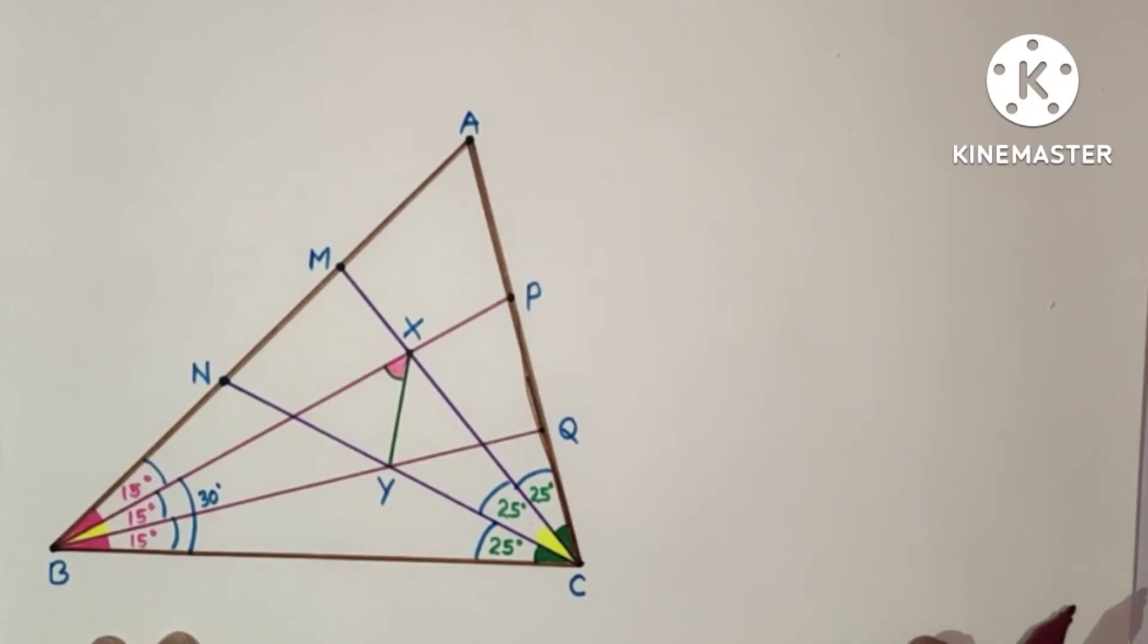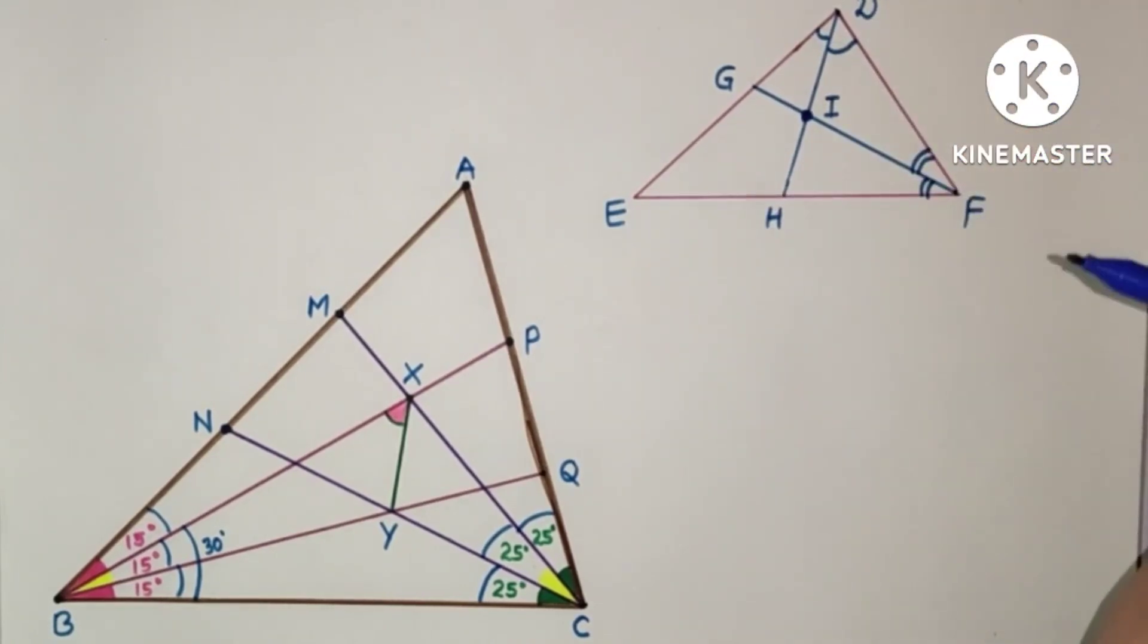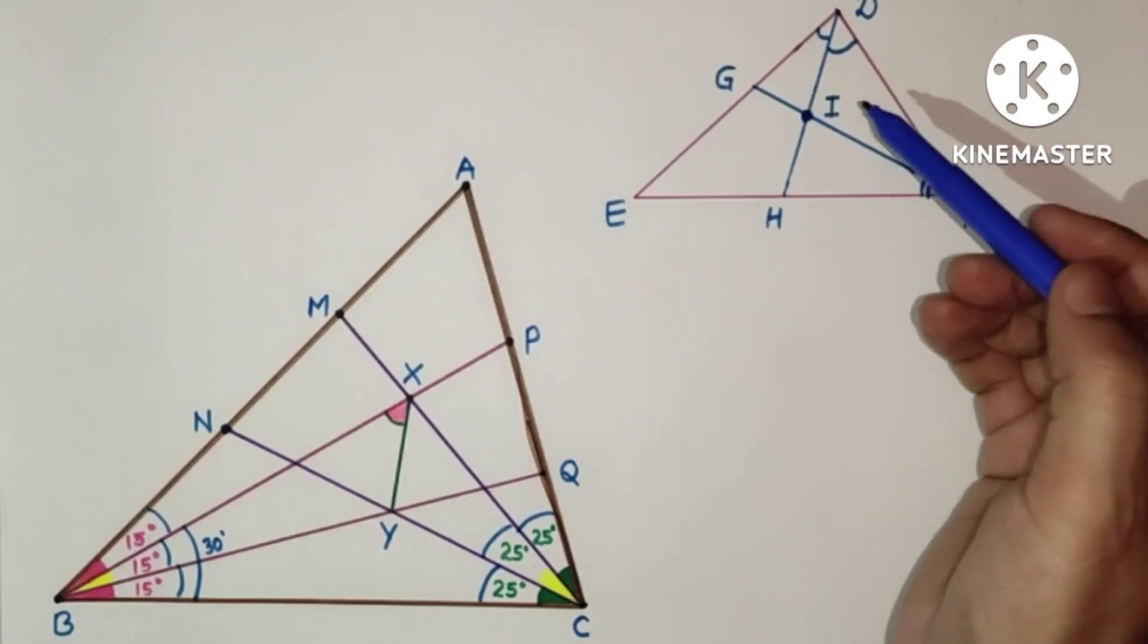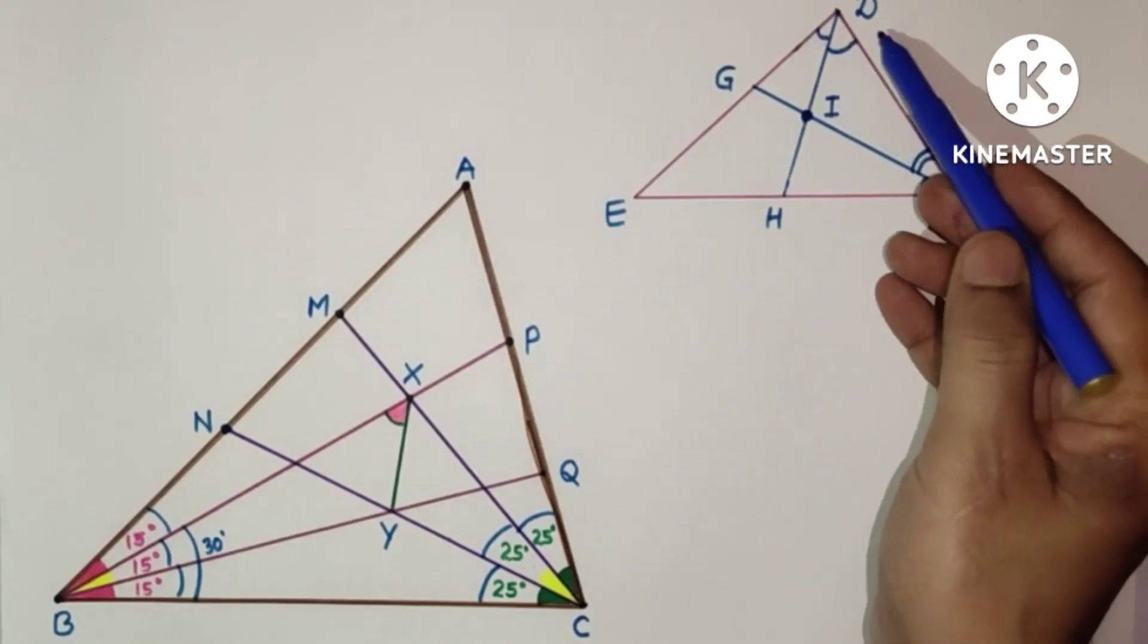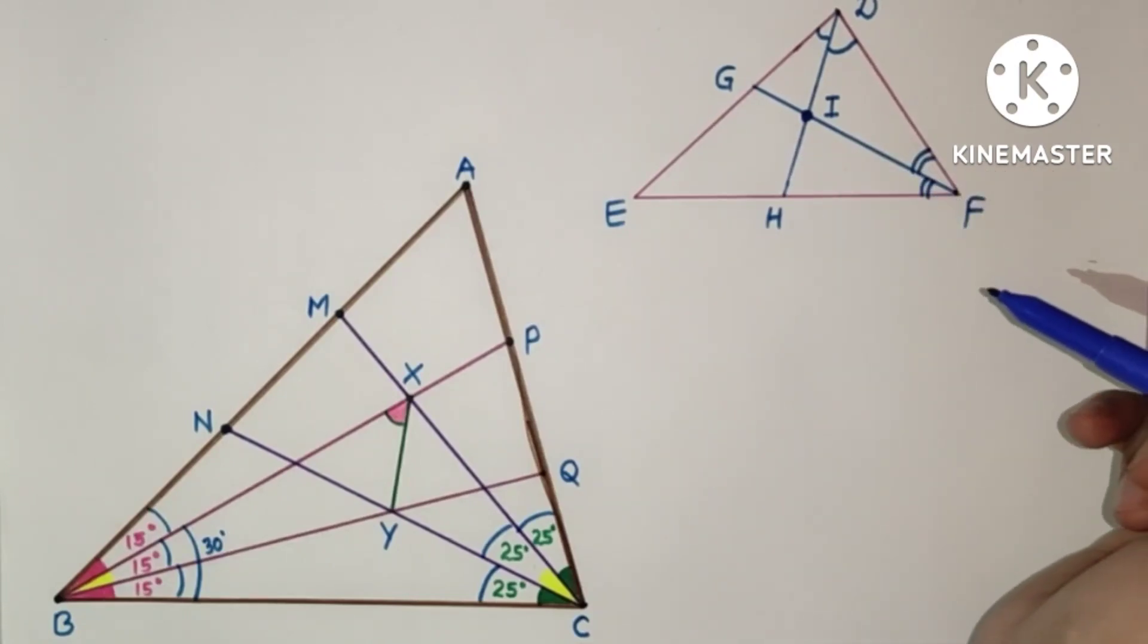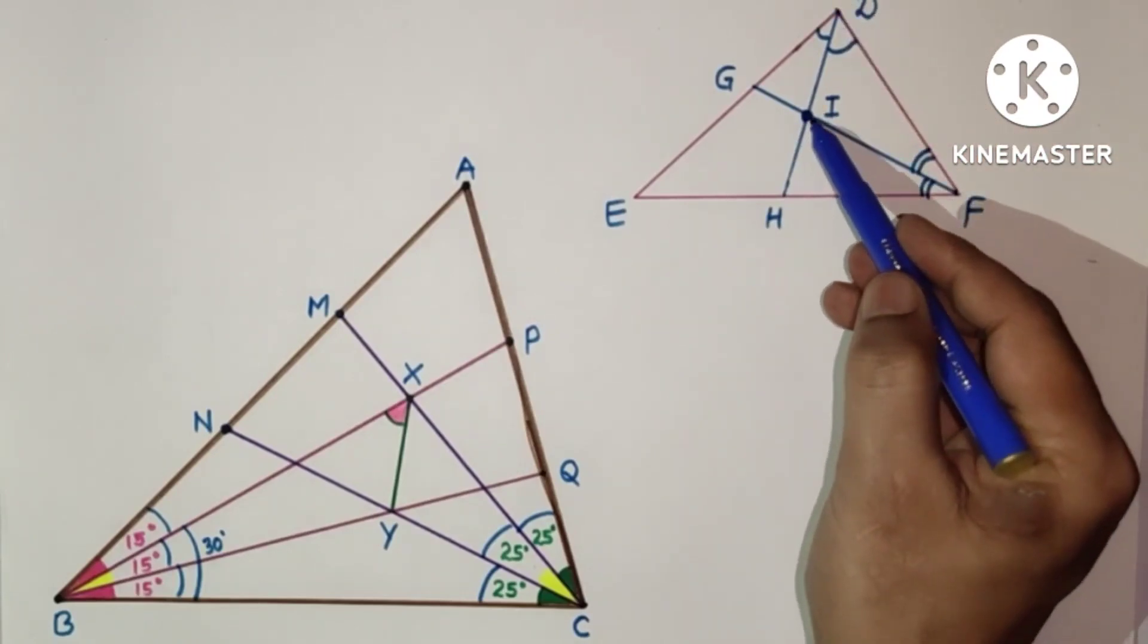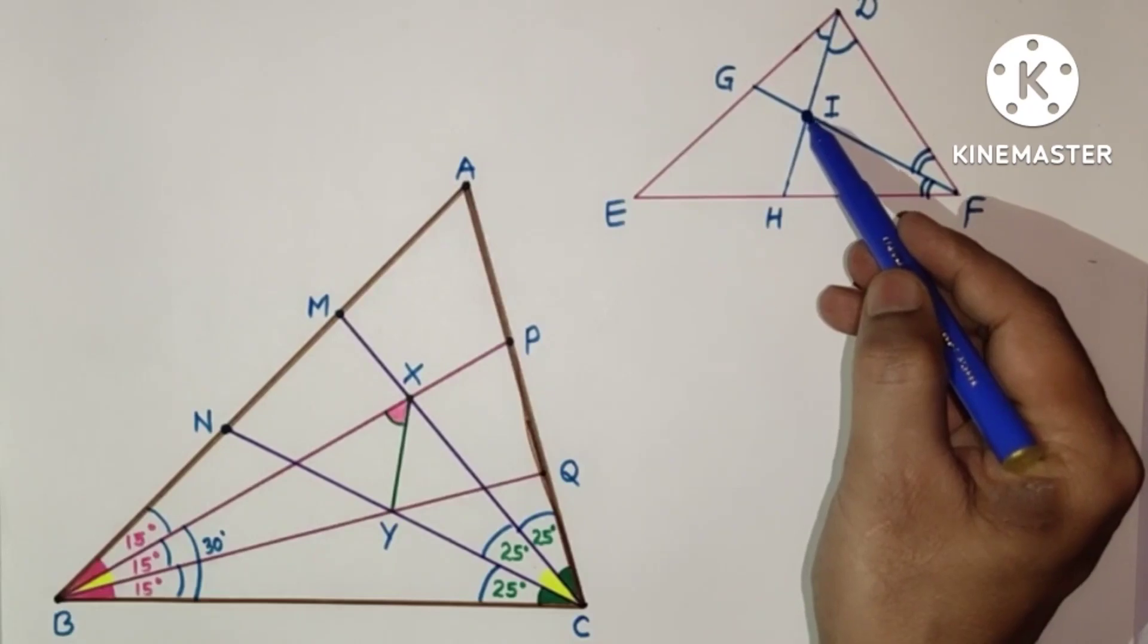We have to understand that intersection point of angle bisectors will be incenter of that triangle. So let this triangle DEF be there and DH bisects this angle D and FG bisects this angle F. So intersection point of these two bisectors is point I. This point is called incenter.